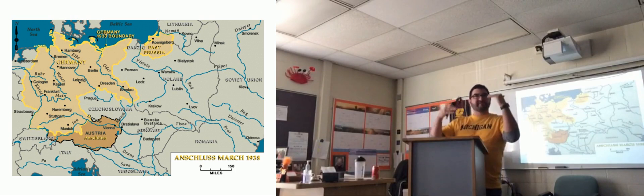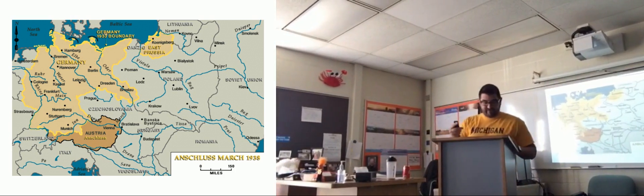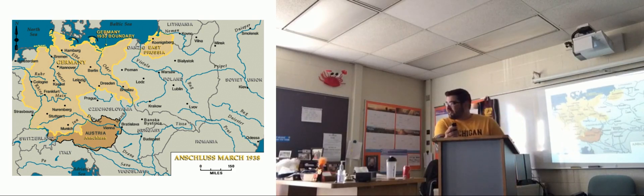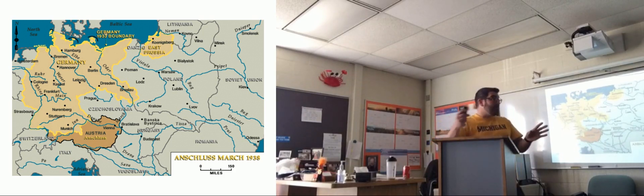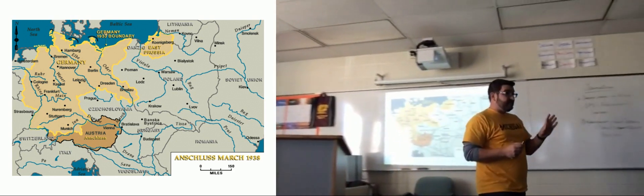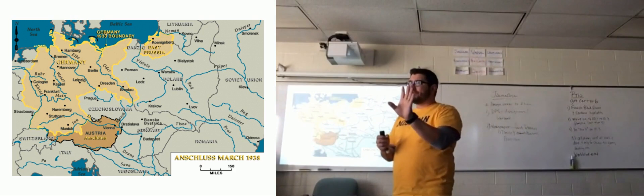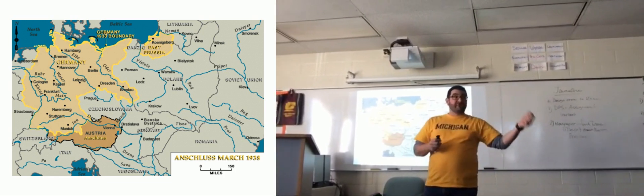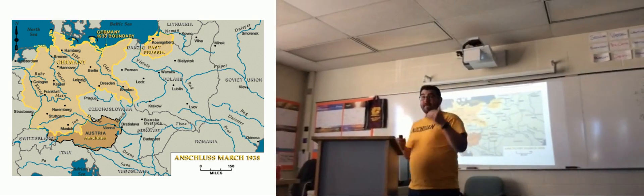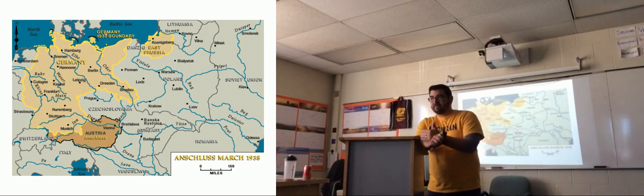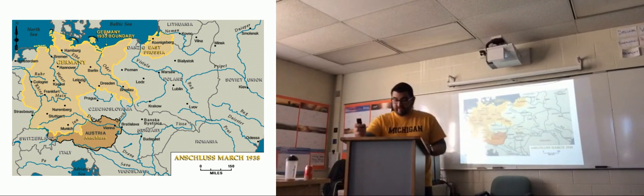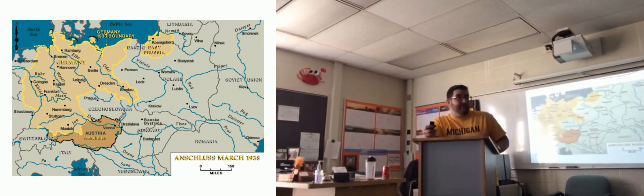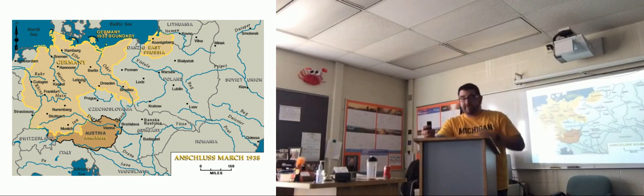In 1936, Germany and Austria signed what is called the Austro-German Agreement, where Germany would reaffirm Austrian independence. What do we call an agreement like this between two nations? It's a bilateral agreement — we already talked about a German-Polish non-aggression pact. These bilateral agreements are easier to make and easier to break. Neither nation would agree to not interfere in the other's affairs.